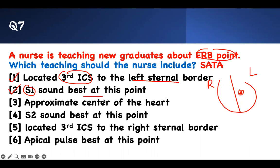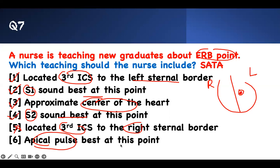You can also hear S2 better there. It is not located on the right of the sternal border — it's on the left. It is not the site of the apical pulse; the apical pulse is at the fifth intercostal space at the mid-clavicular line. So answers two, three, and four are correct — everything is at Erb's point.